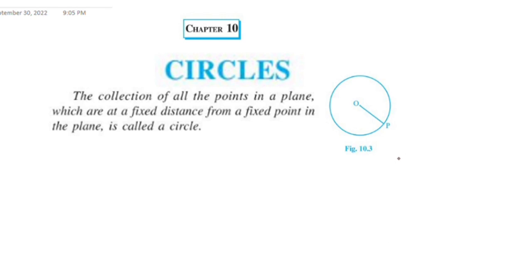Let's come to the first part. In this example, it will be a circle. How we learn a circle: the collection of all the points in a plane which are at a fixed distance from a fixed point in the plane is called a circle.